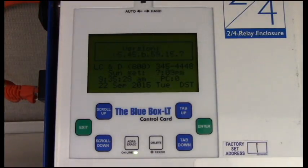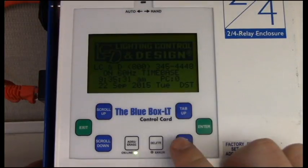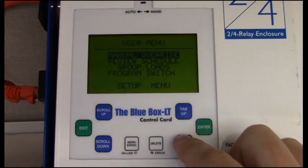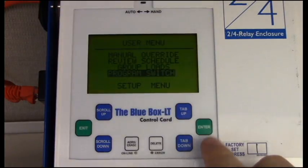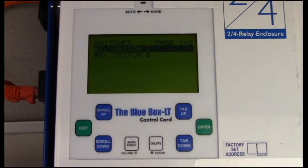To do so, enter into the user menu and tab down to select Program Switch and press Enter. From this page, you should see a listing of all the switches currently a part of your system.